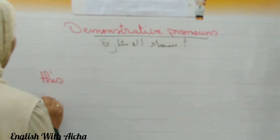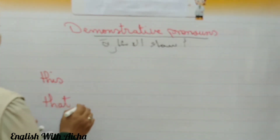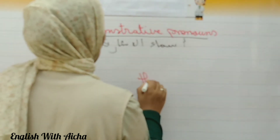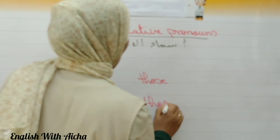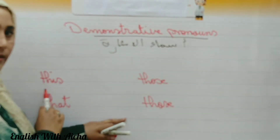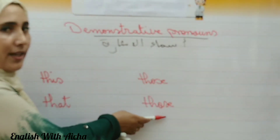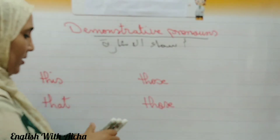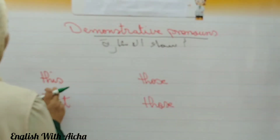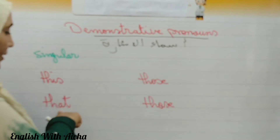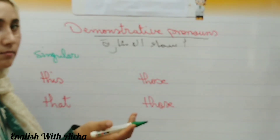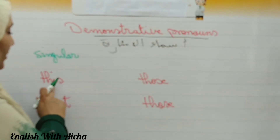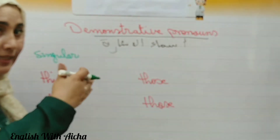So we have: this, that, these, and those. We use 'this' for singular, and 'that' also for singular. But what's the difference? 'This' is for singular and near.